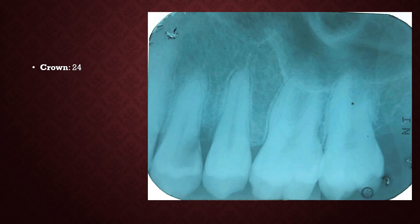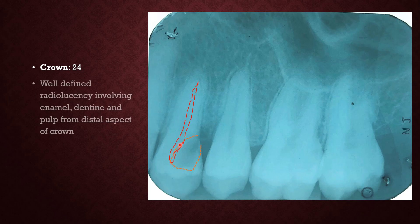We have identified that our tooth of interest here is 2-4. We see a radiolucency in the crown. This radiolucency, if you observe closely, is arising from the distal part of the crown and is extending to involve the enamel as well as the dentine. You will also see that it is actually involving the pulp of the tooth. This radiolucency most likely looks like dental caries — a well-defined radiolucency involving enamel, dentine, and the pulp.